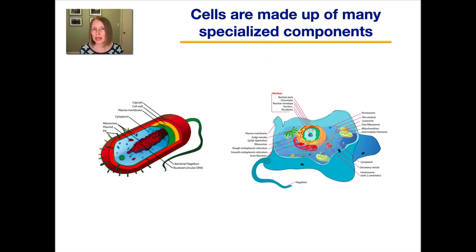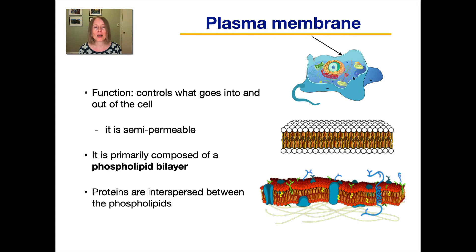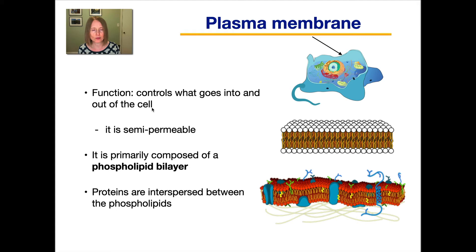All cells are made up of many specialized components. Both prokaryotic and eukaryotic cells have structures that each have a unique function. We're going to first focus on structures that both prokaryotic and eukaryotic cells share in common. The first one we'll talk about is the plasma membrane — this outer blue layer that surrounds the whole cell, which keeps the cell together as one structure. Its main function is that it controls what goes into and out of the cell.